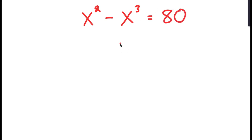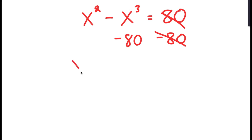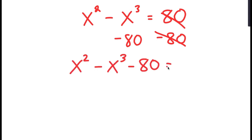To solve this equation, I'm going to first start by subtracting 80 on both sides. So now I get x squared minus x cubed minus 80 is equal to 0.